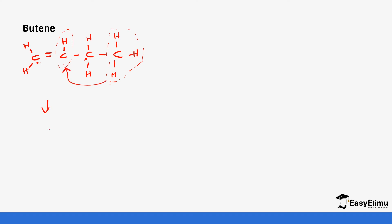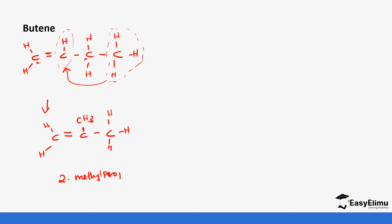Our new isomer is now reduced to three carbons. We have brought the CH3 group we just moved here, and then we put the double bond where it was and place the hydrogens. So butene has one branching isomer and it is referred to as 2-methyl-prop-1-yne.